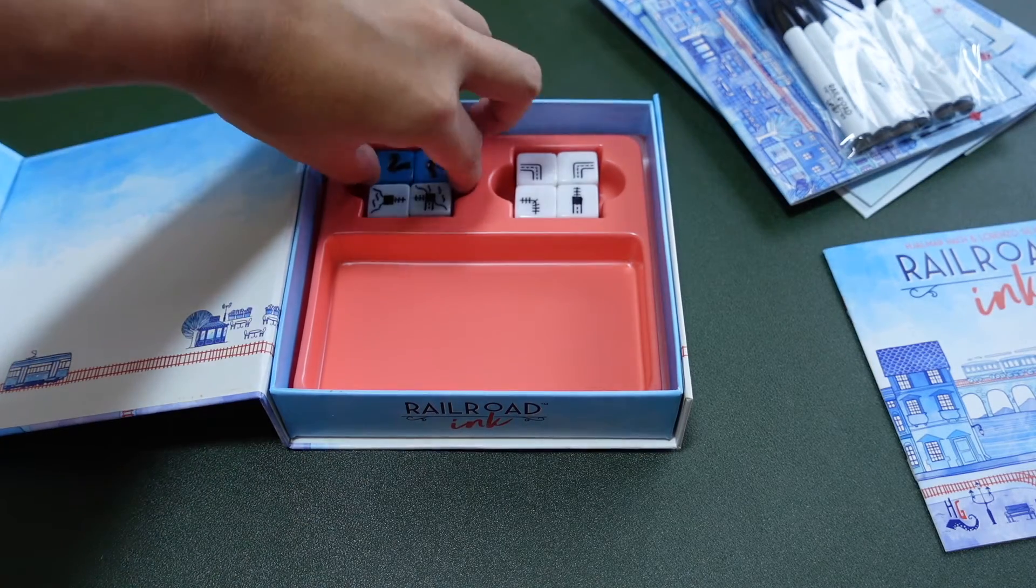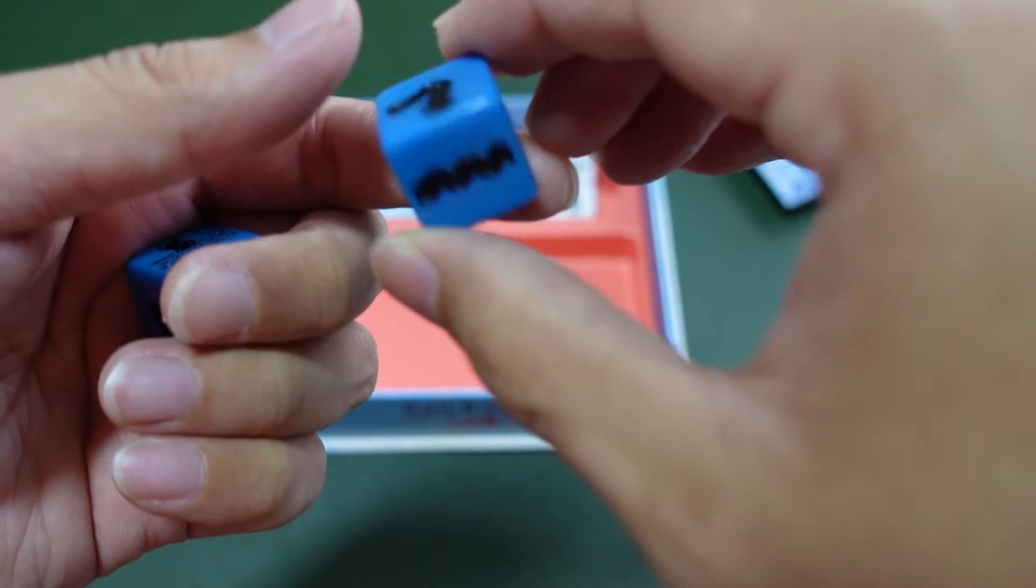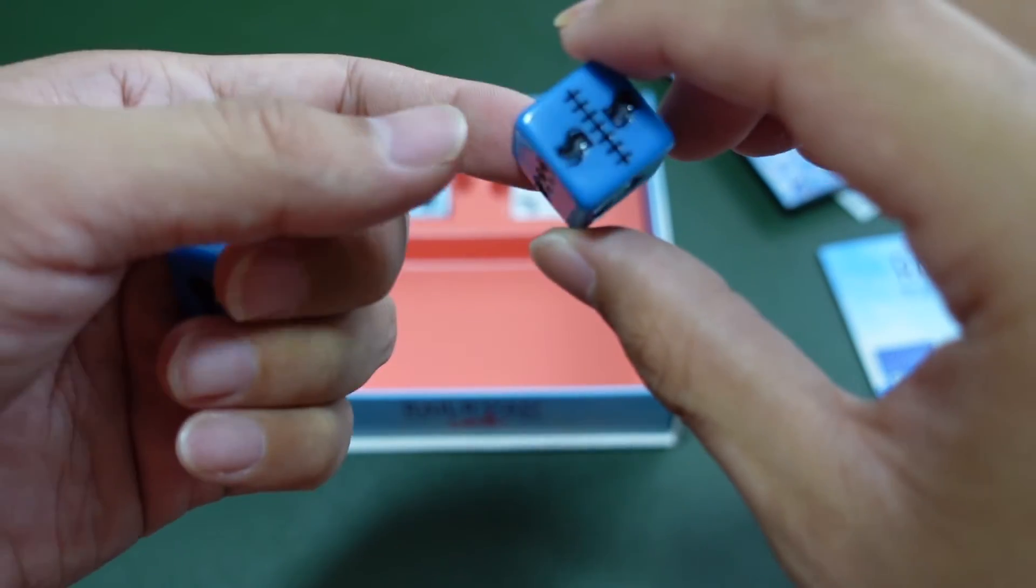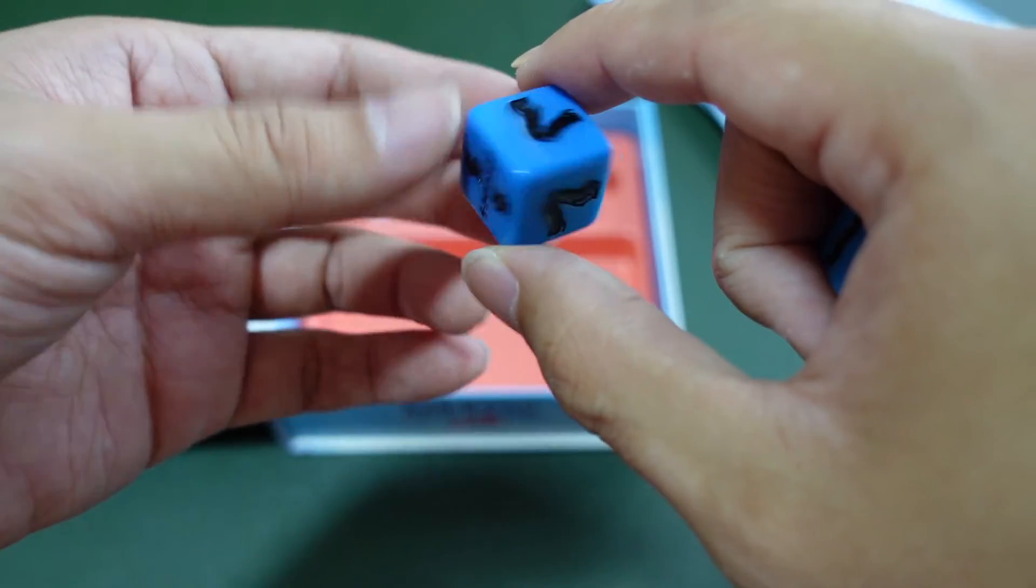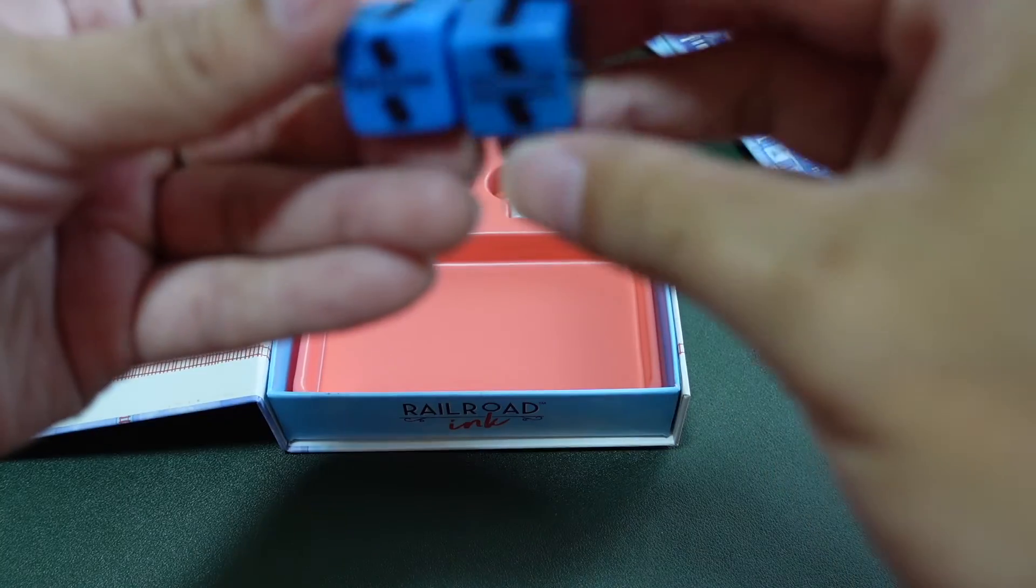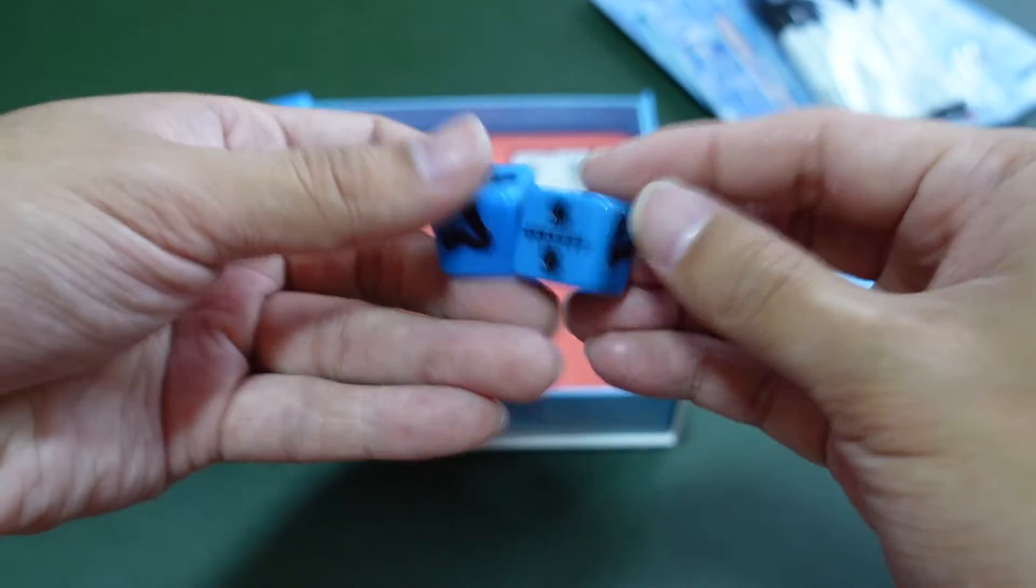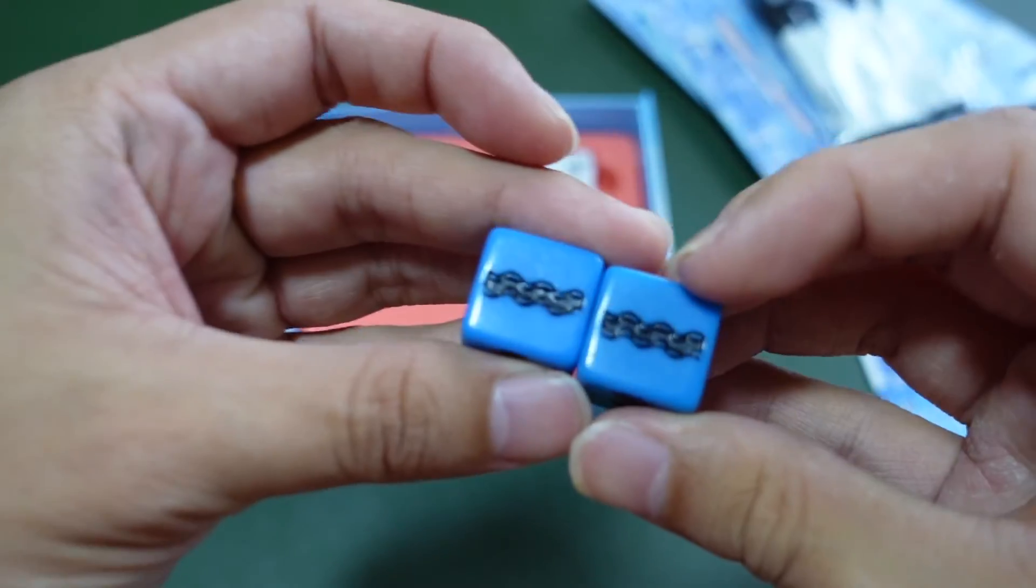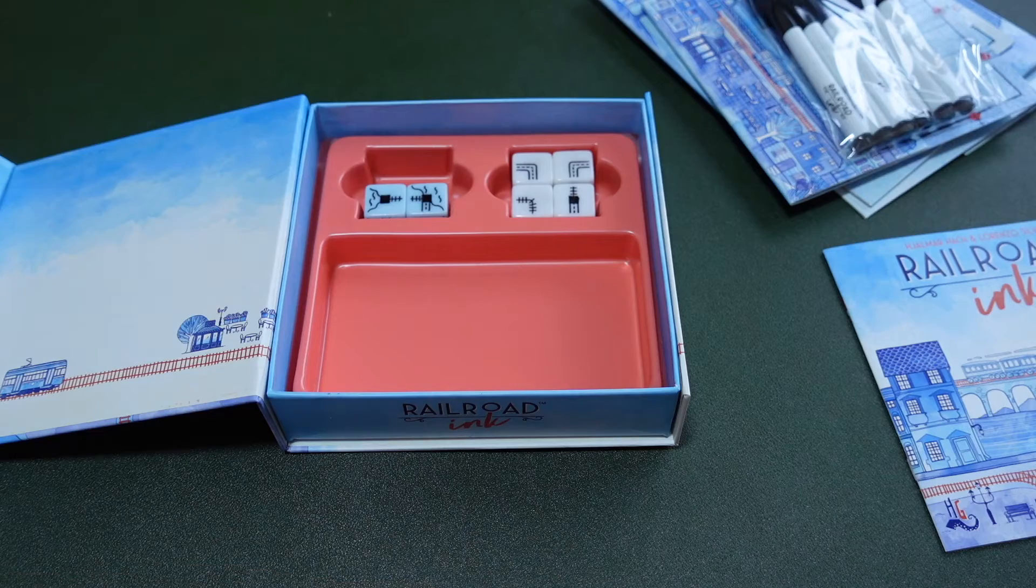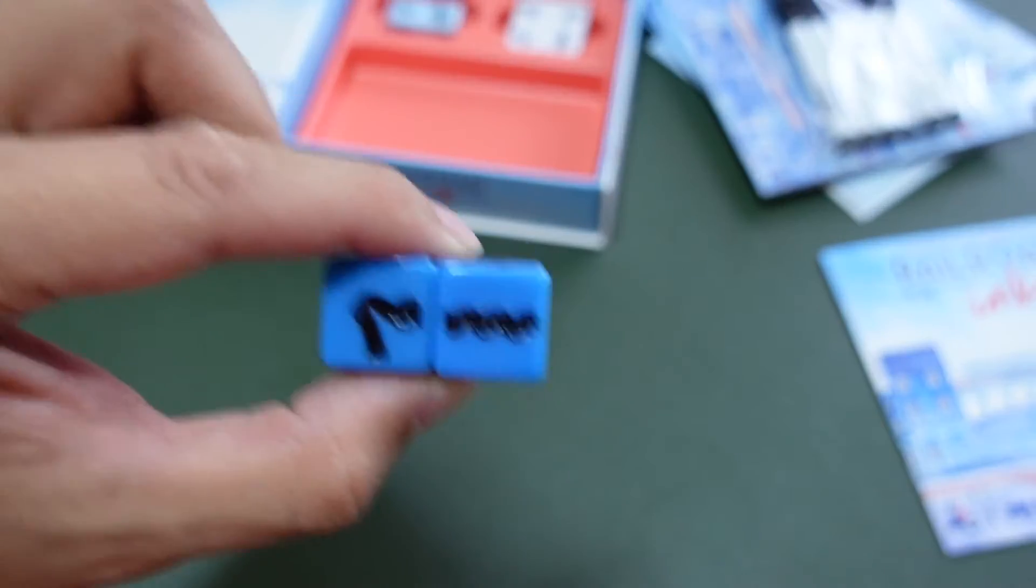These are the river dice. The river dice also have some roads in between. This one is a railroad. They have the same faces. They have some scratches, but I guess that's normal.